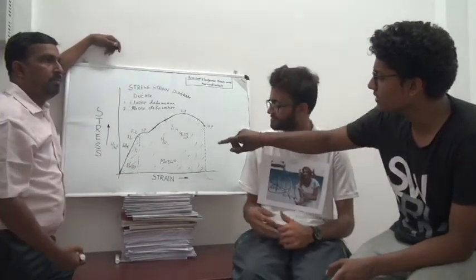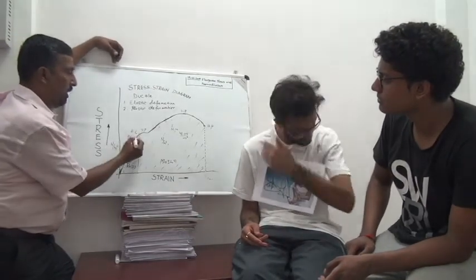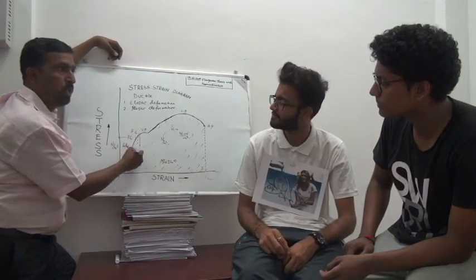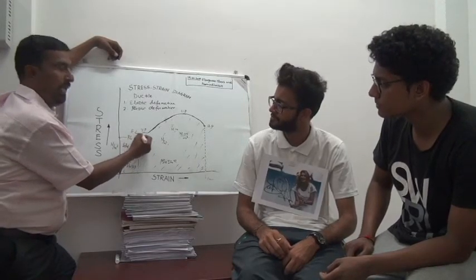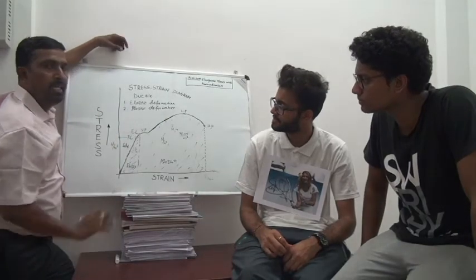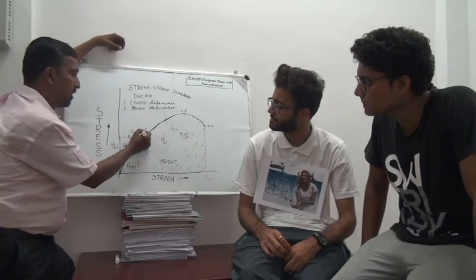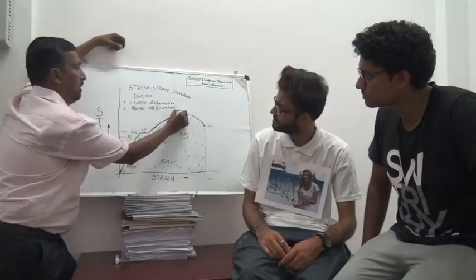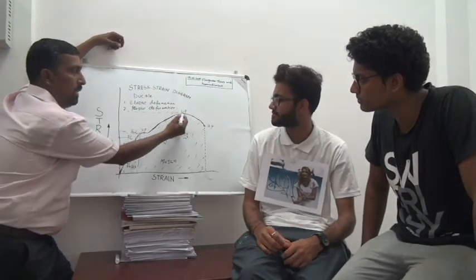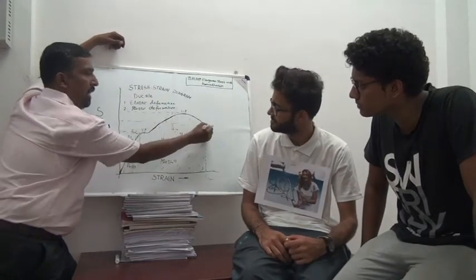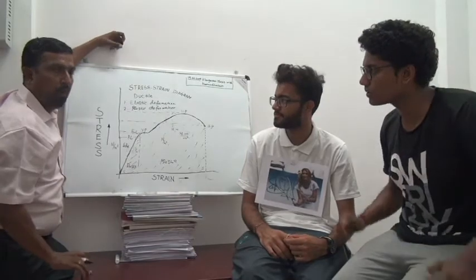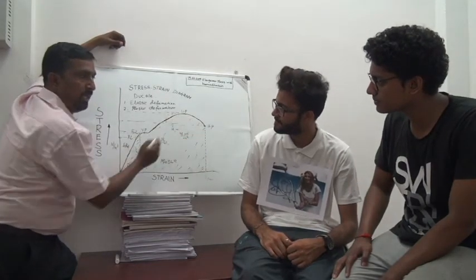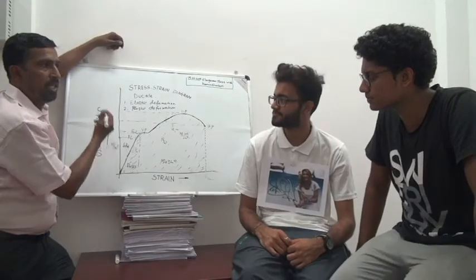What are the definitions and units of these points? The Proportional Limit is the stress limit up to which stress is directly proportional to strain. Elastic Limit is the stress limit up to which the material has elastic property. Yield Point is the stress at which the material yields plastic deformation. Ultimate Point is the maximum stress the material can withstand. Breaking Point is the stress at fracture. For all these points, the unit is Newton per meter square, or Newton per millimeter square. Bye!